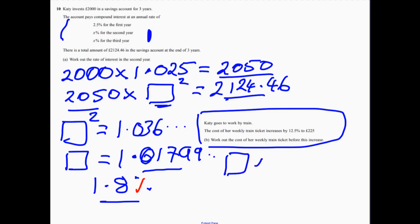the original cost. And that's been multiplied by... an increase of 12.5%. So, that's been multiplied by 1.125. That represents a 12.5% increase. And that equals 225.